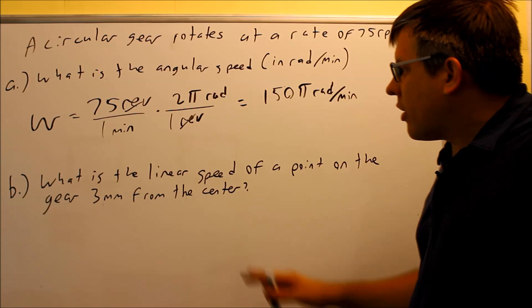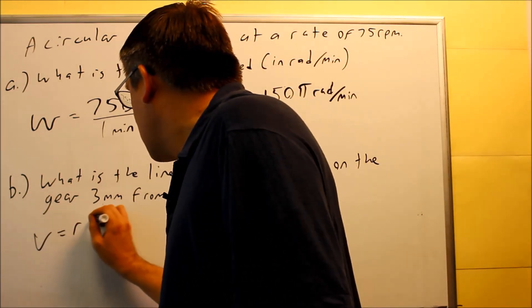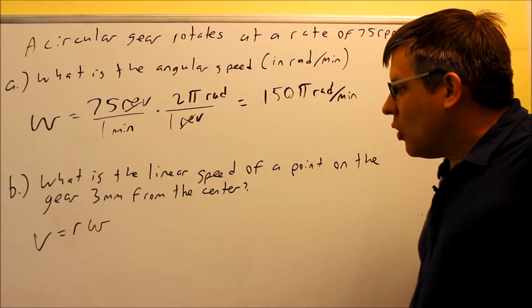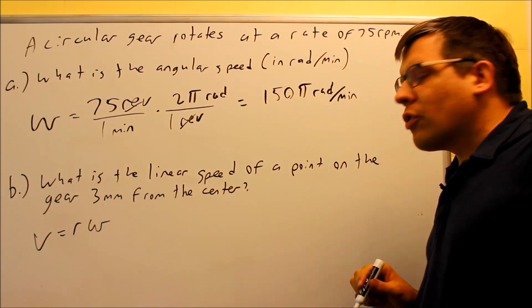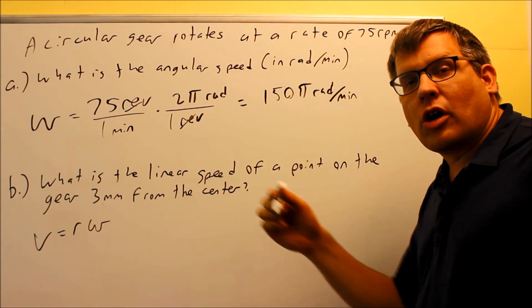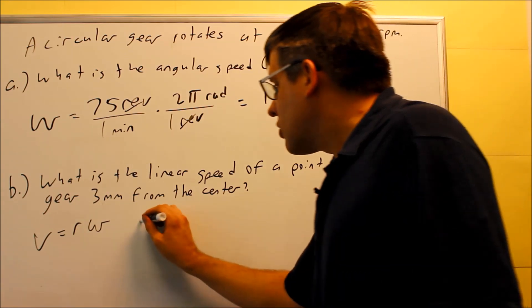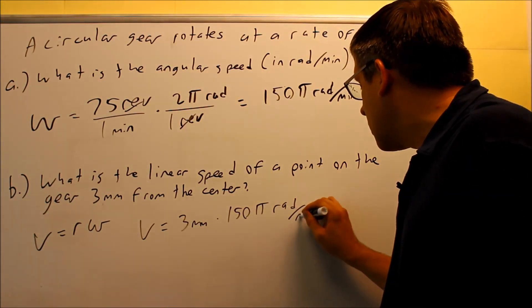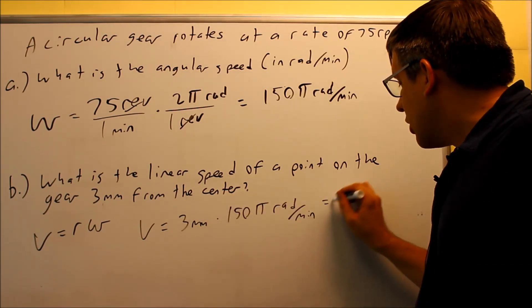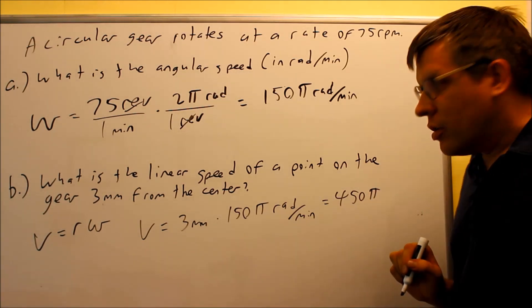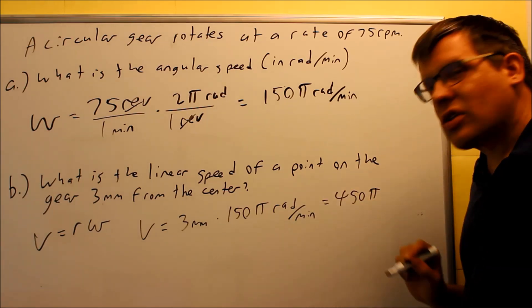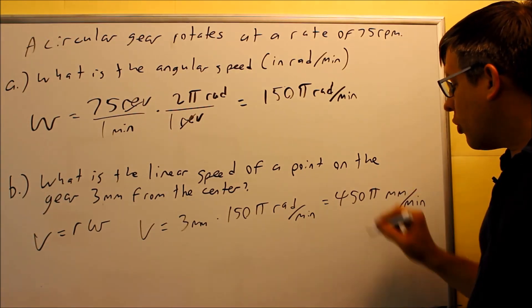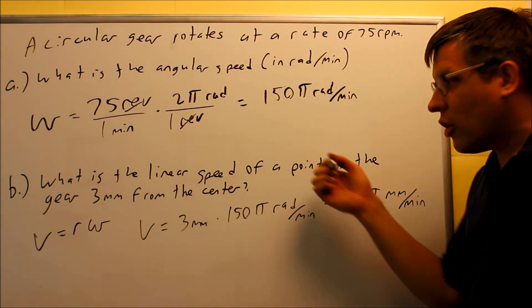For linear speed, we use v equals r times omega. Omega is 150 pi radians per minute from part A, and the radius is 3 millimeters from the center. Multiplying 3 millimeters by 150 pi radians per minute gives 450 pi. Since radians are dimensionless units, the final answer is 450 pi millimeters per minute — the amount of distance covered per unit of time.